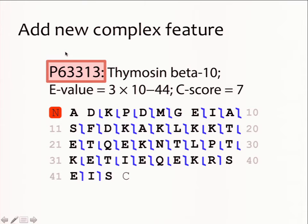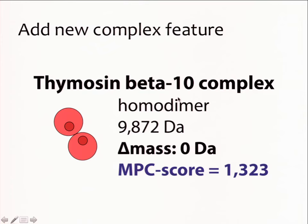Now we have all the information needed for a discovery step: our MS1 intact complex values, our ejected monomer, our fragment ions, and a proteoform. We input all of this into our search engine for multiproteiform complexes and determine that this is indeed a thymosin beta 10 complex — it's a homodimer, which was already clear from the monomer ejection step. Our online search tool tells us the delta mass: we observe a zero-Dalton difference, and we have an outstanding MPC score of 1,323.